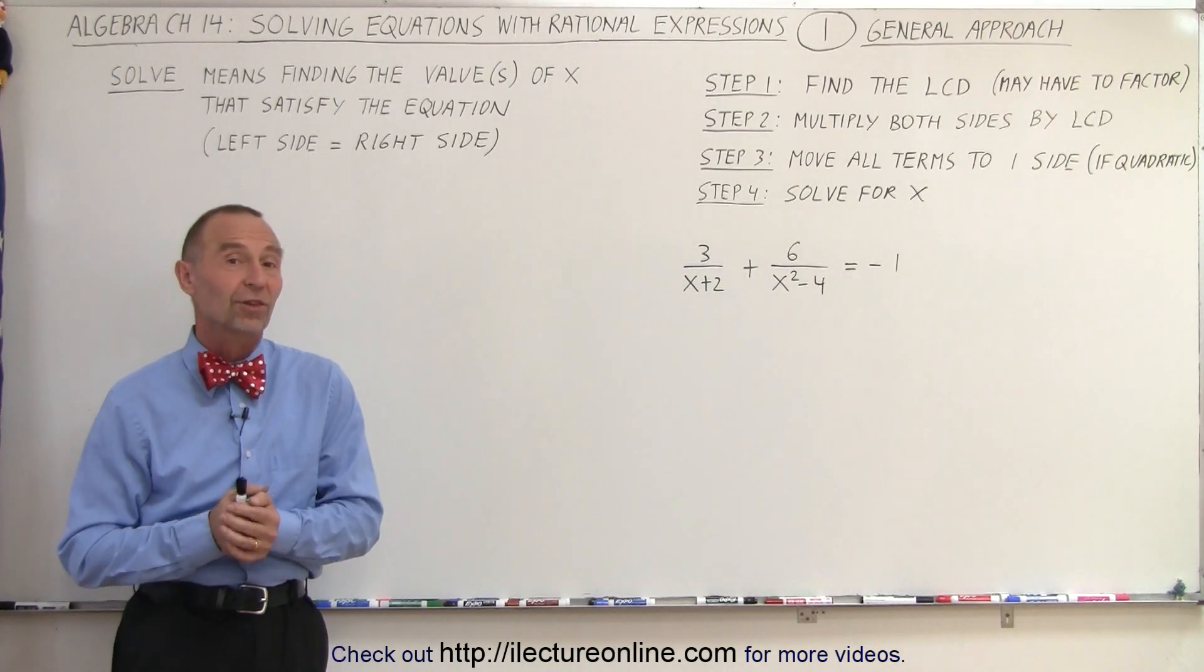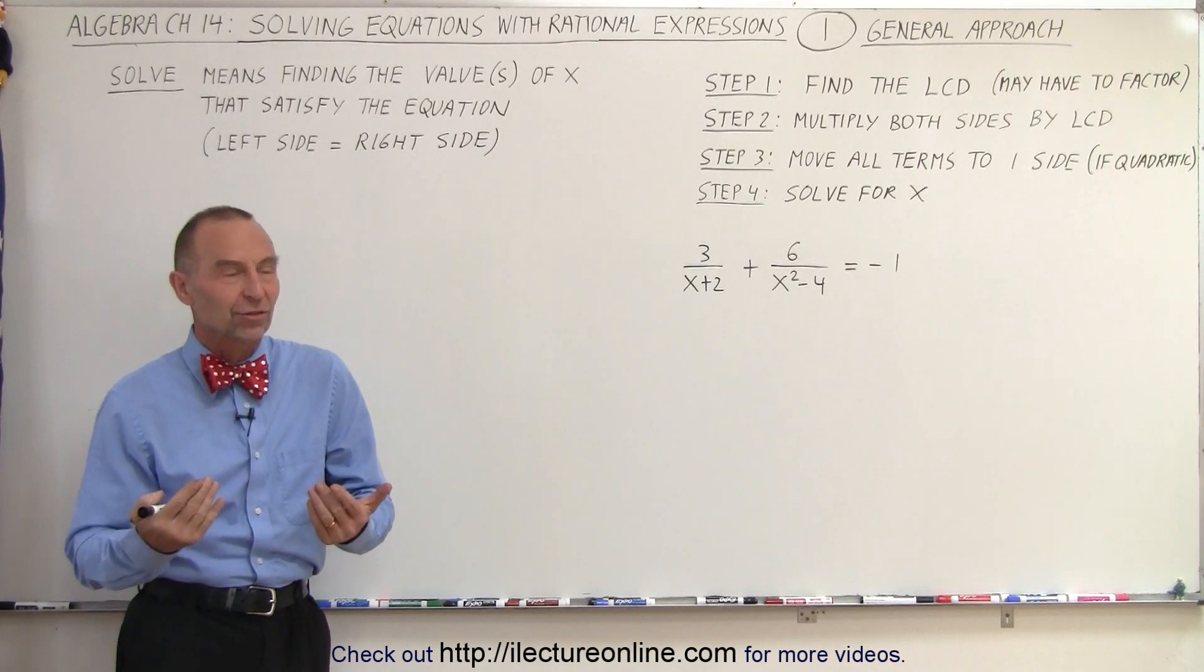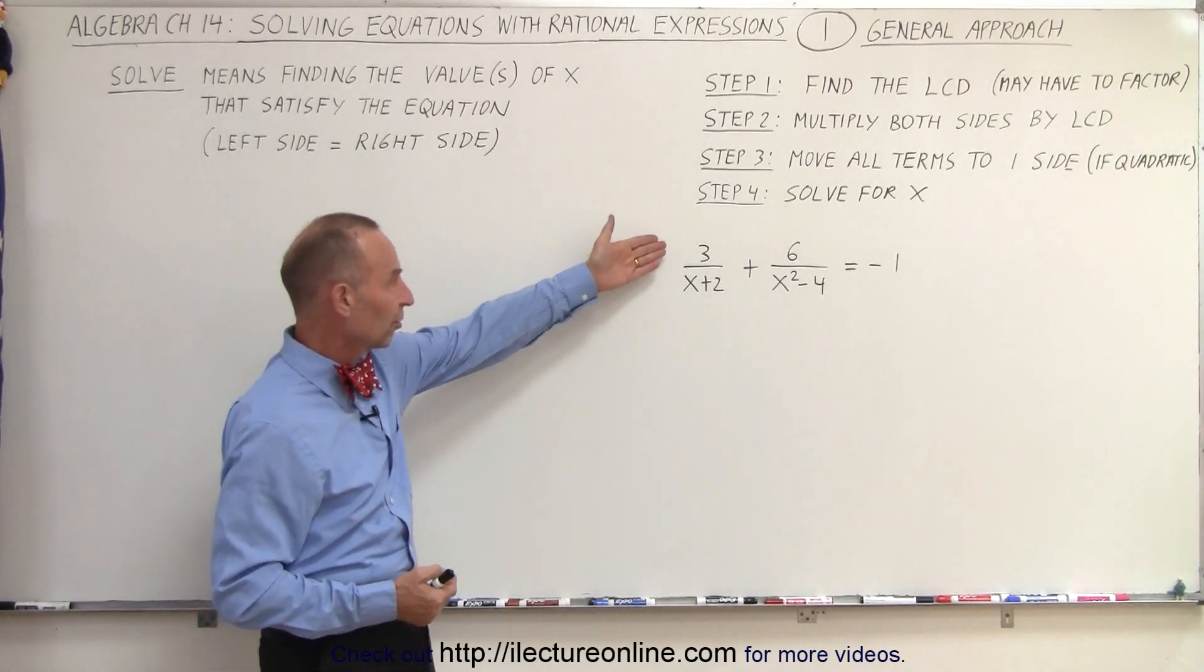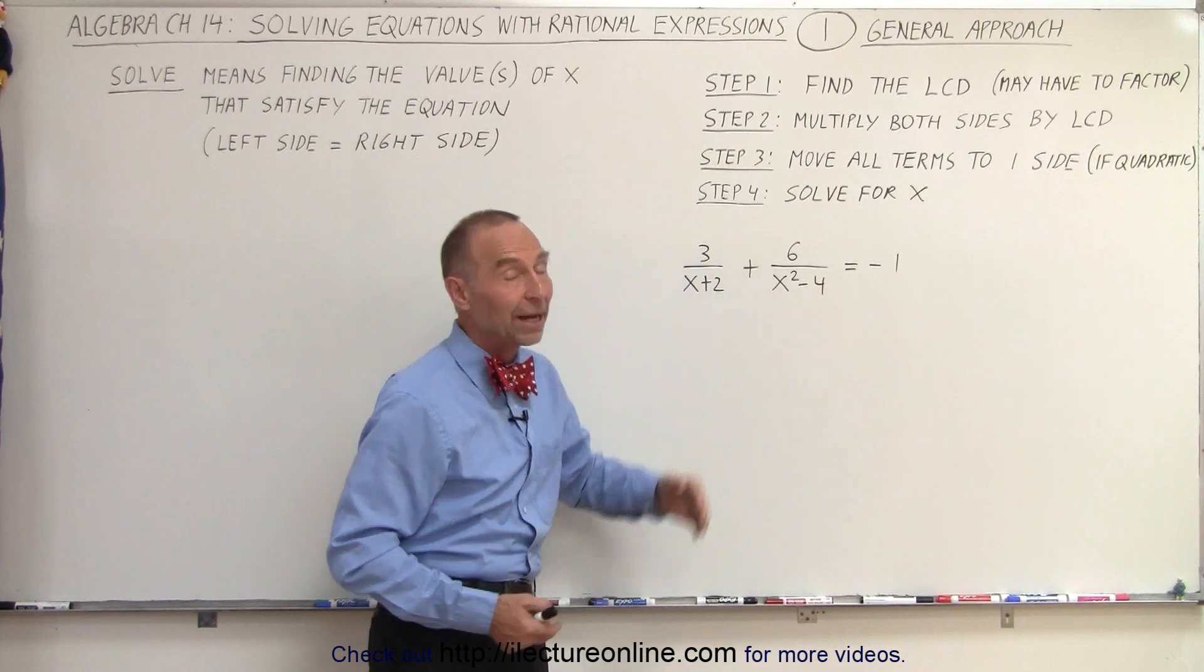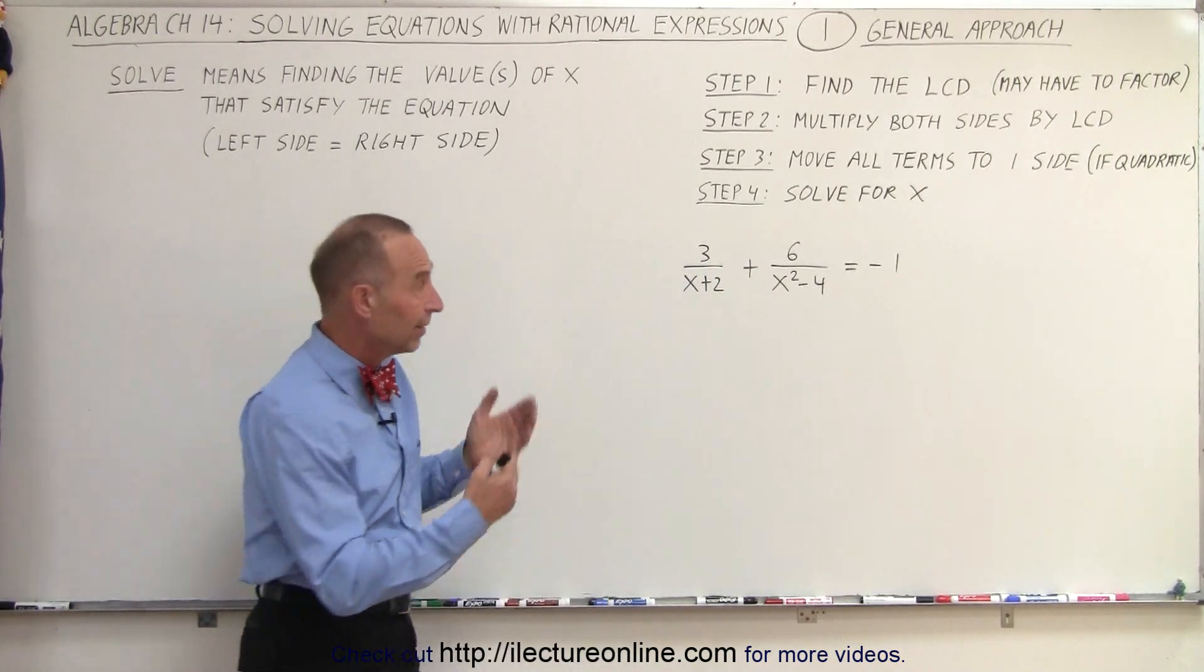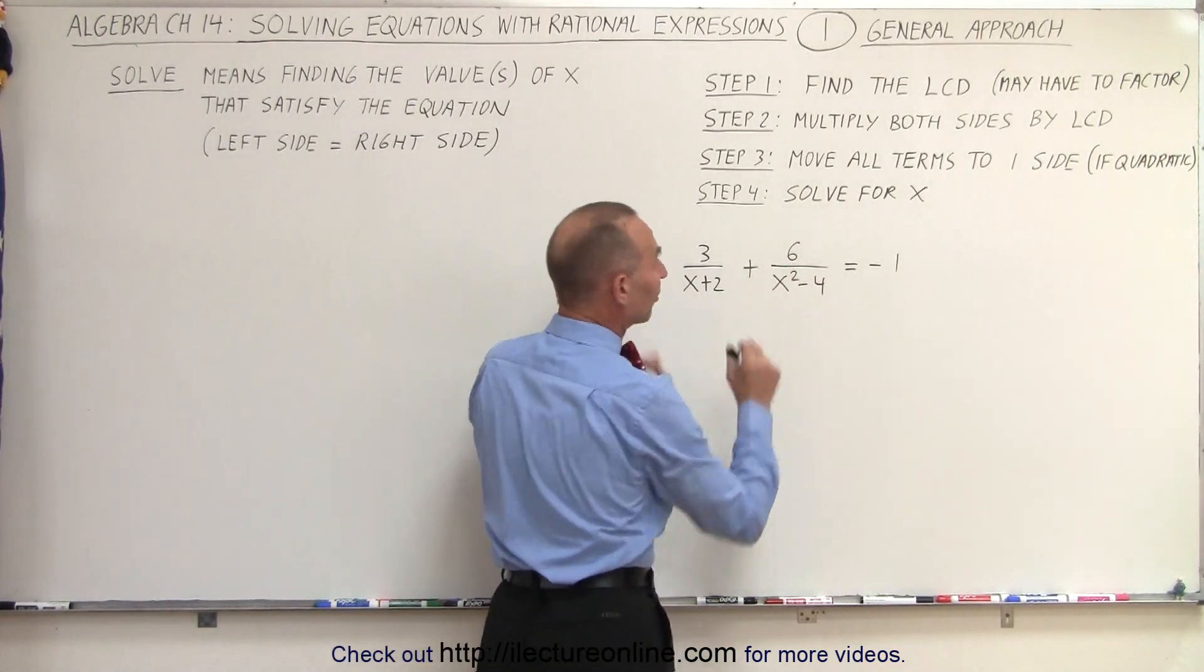And remember what rational expressions are, they're simply fractions. So here we have a fraction 3 over x plus 2, then 6 over x squared minus 4, so that's why this is an equation with rational expressions.